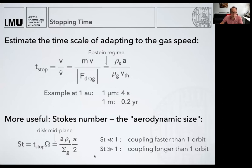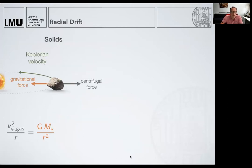So what does it really tell you? If the Stokes number is very small, it means that particles couple to the gas very quickly, faster than one orbit. Given these drag forces, we can derive an important ingredient: radial drift.